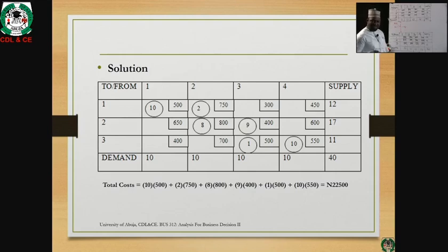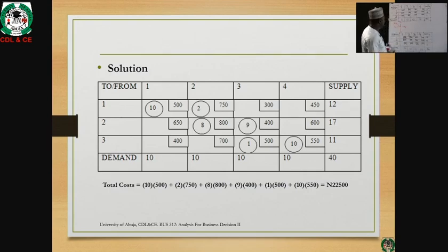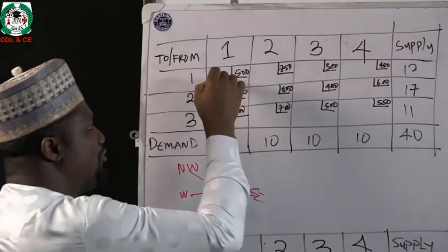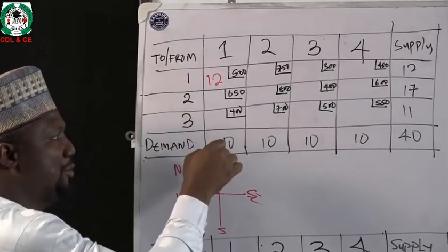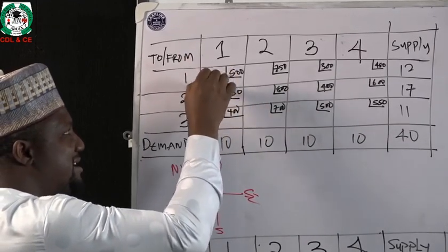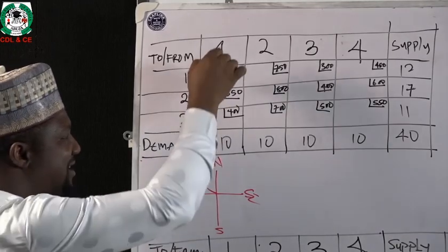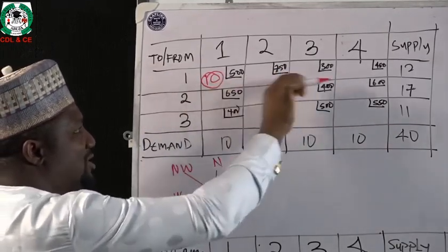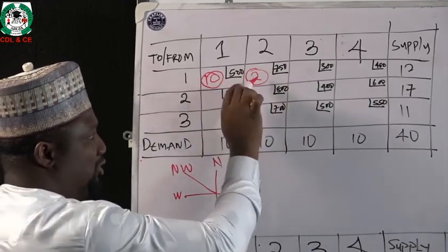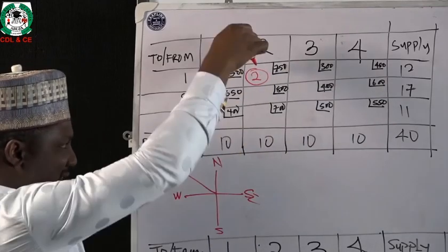We start from the north-west corner. The maximum we can put here — this cell can size 12, but the column can only size 10, so we allocate 10. We then allocate 2 to balance the row totaling 12. Then 10 exhausts the column. We balance the next cell with 8, so that 2 plus 8 equals 10. Then we need to balance 17, so we put 9, making 8 plus 9 equal 17.